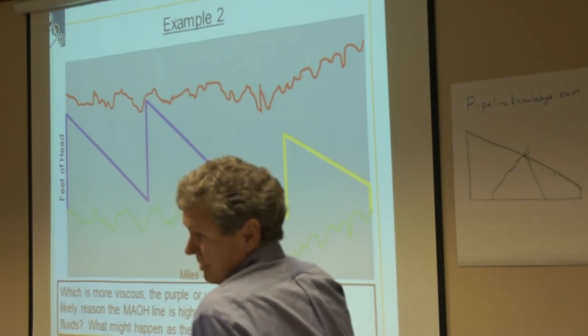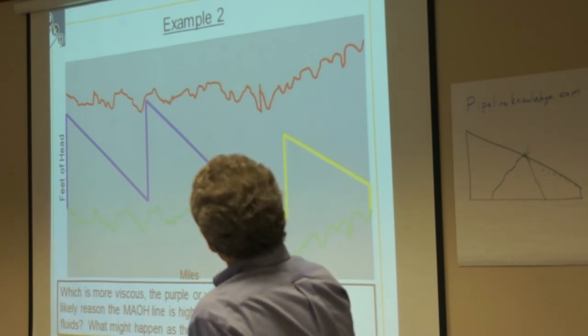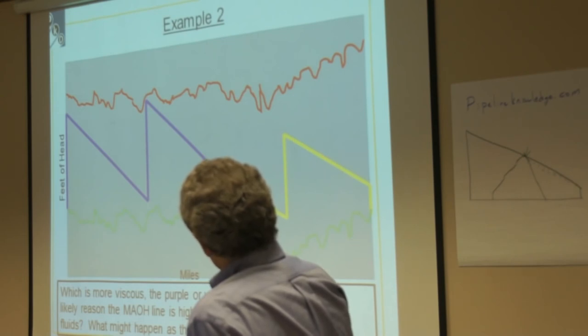Other way around. So this is going to be less viscous than that, because this has more pressure loss per mile.